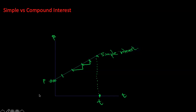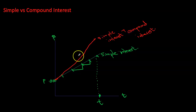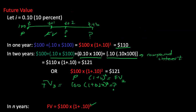With compound interest, every year you earn slightly more than the previous year — interest on interest accumulates — and over time this rises significantly. The compound interest amount may seem small at first, but it becomes significantly larger over many years, especially beyond 10 years.